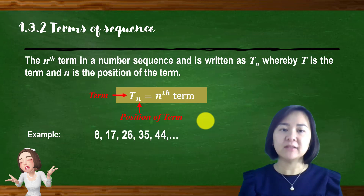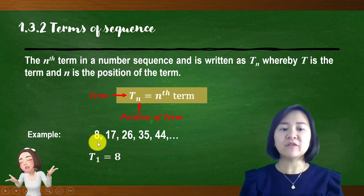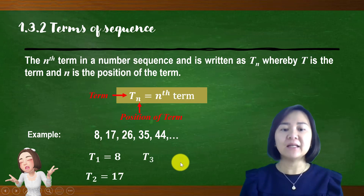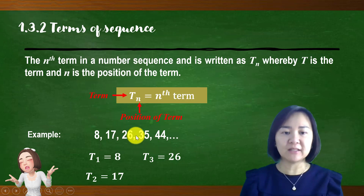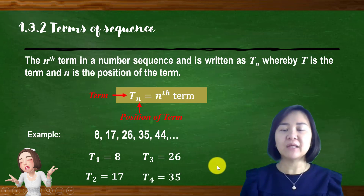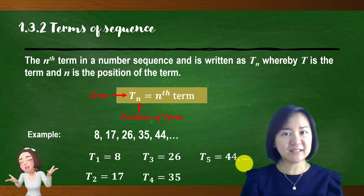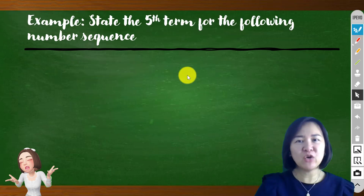This is a sequence. How we determine the terms of sequence: the first number 8 is Term 1, the second term is 17, the third term is 26, the fourth term is 35, and the fifth term is 44. This is how we write out the terms of a sequence.